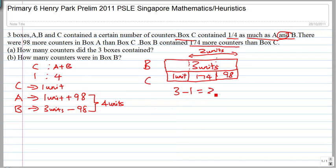The three minus one equals to two. Two units is equals to 174 plus 98. So two units is equals to 272. One unit is equals to 136. How many counters did the three boxes contain?